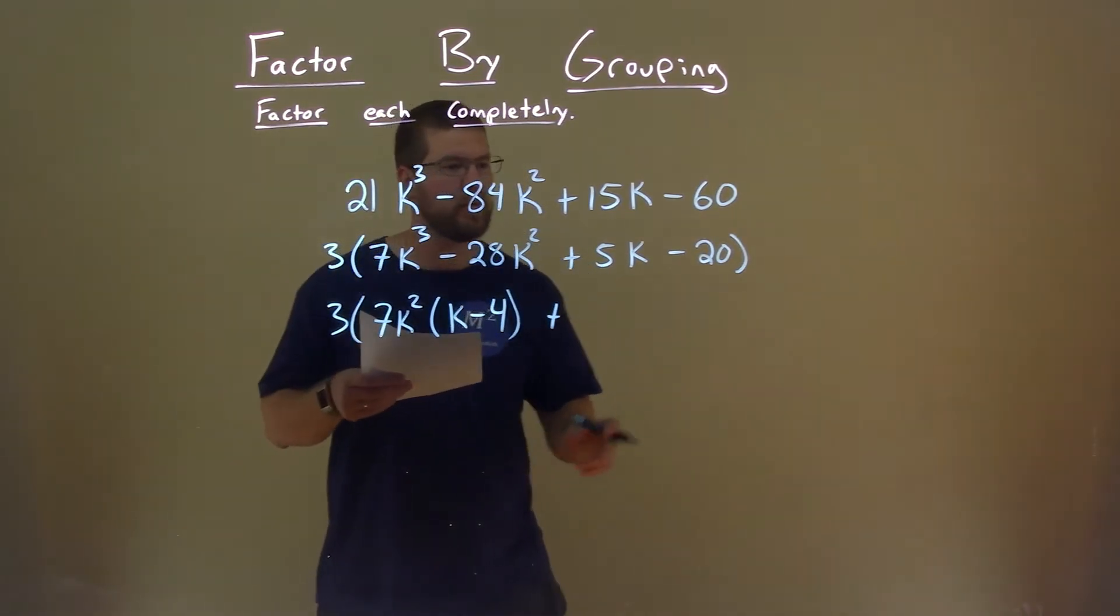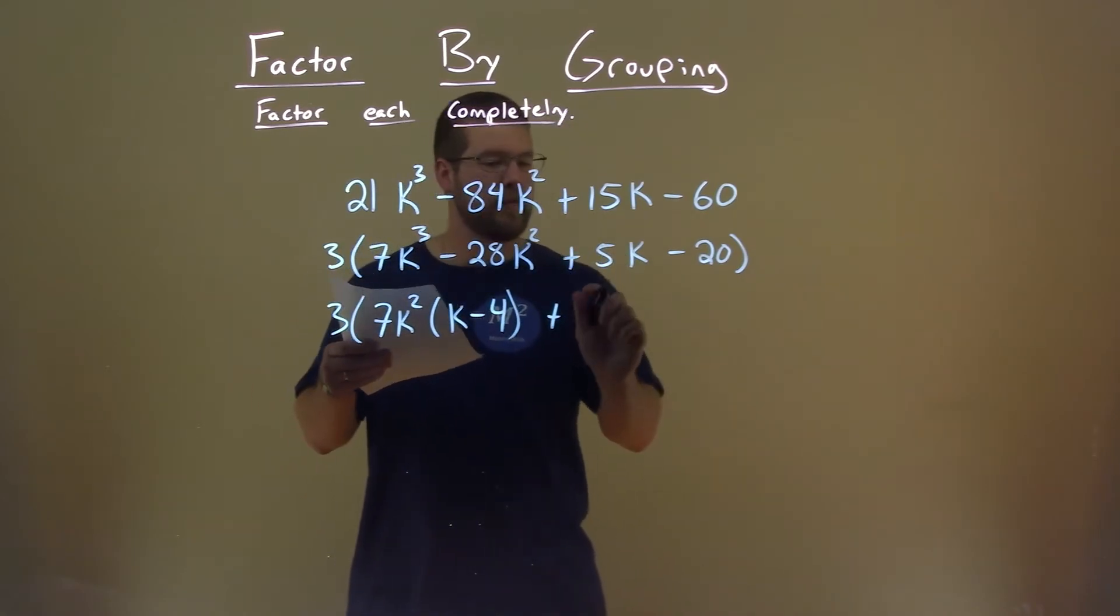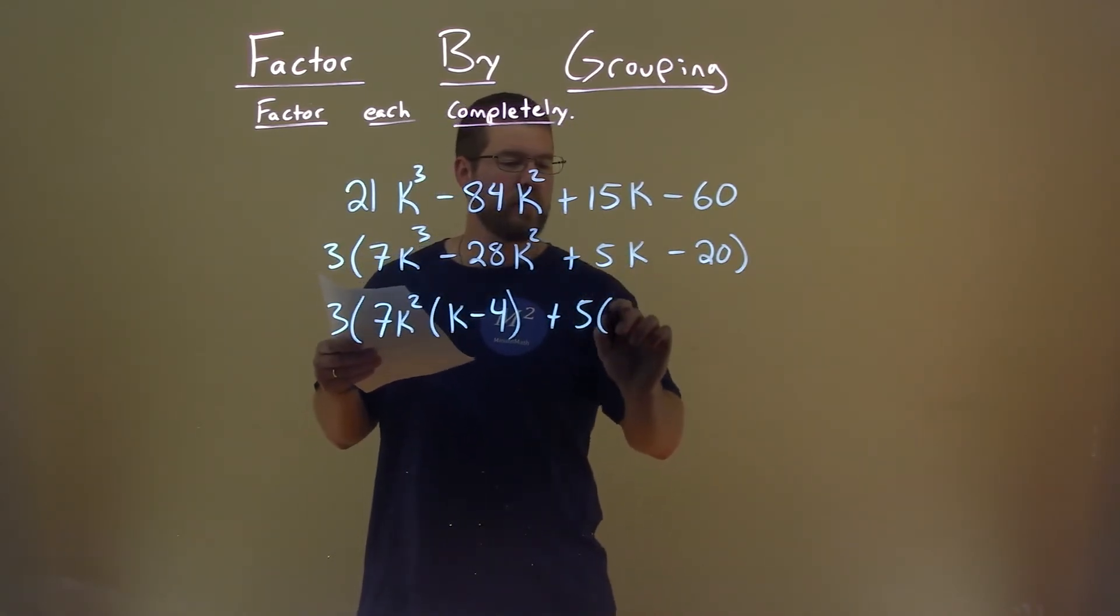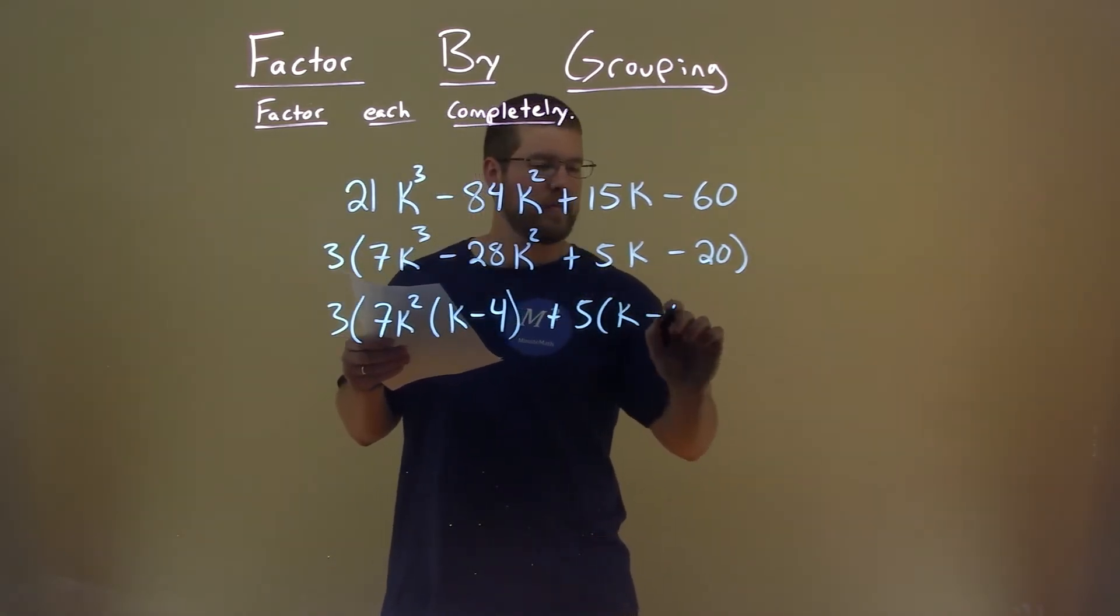All right, second set of numbers. What can we pull out? Well, we can pull out a 5. 5 comes out, we're left with a k here, minus 4.